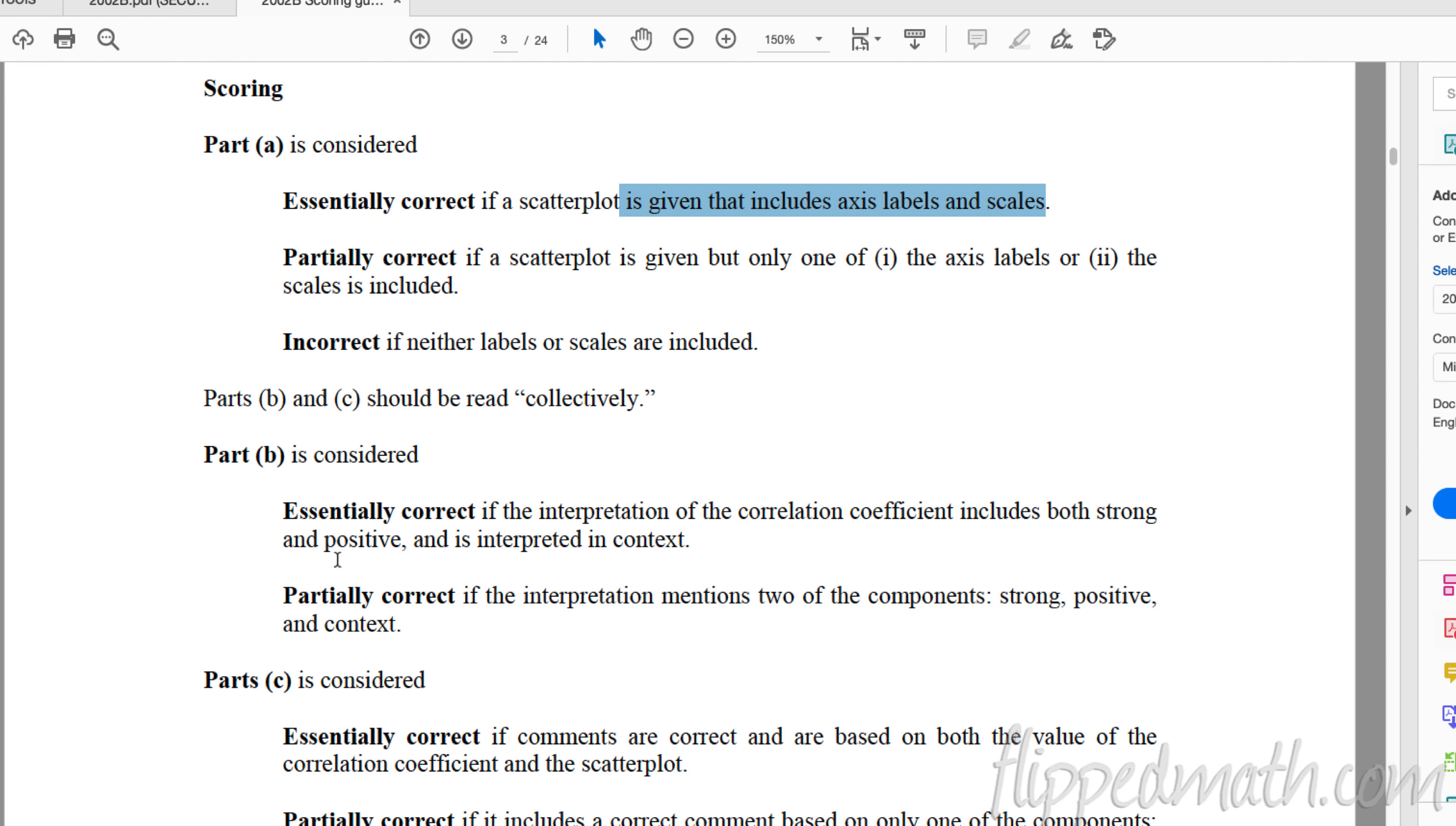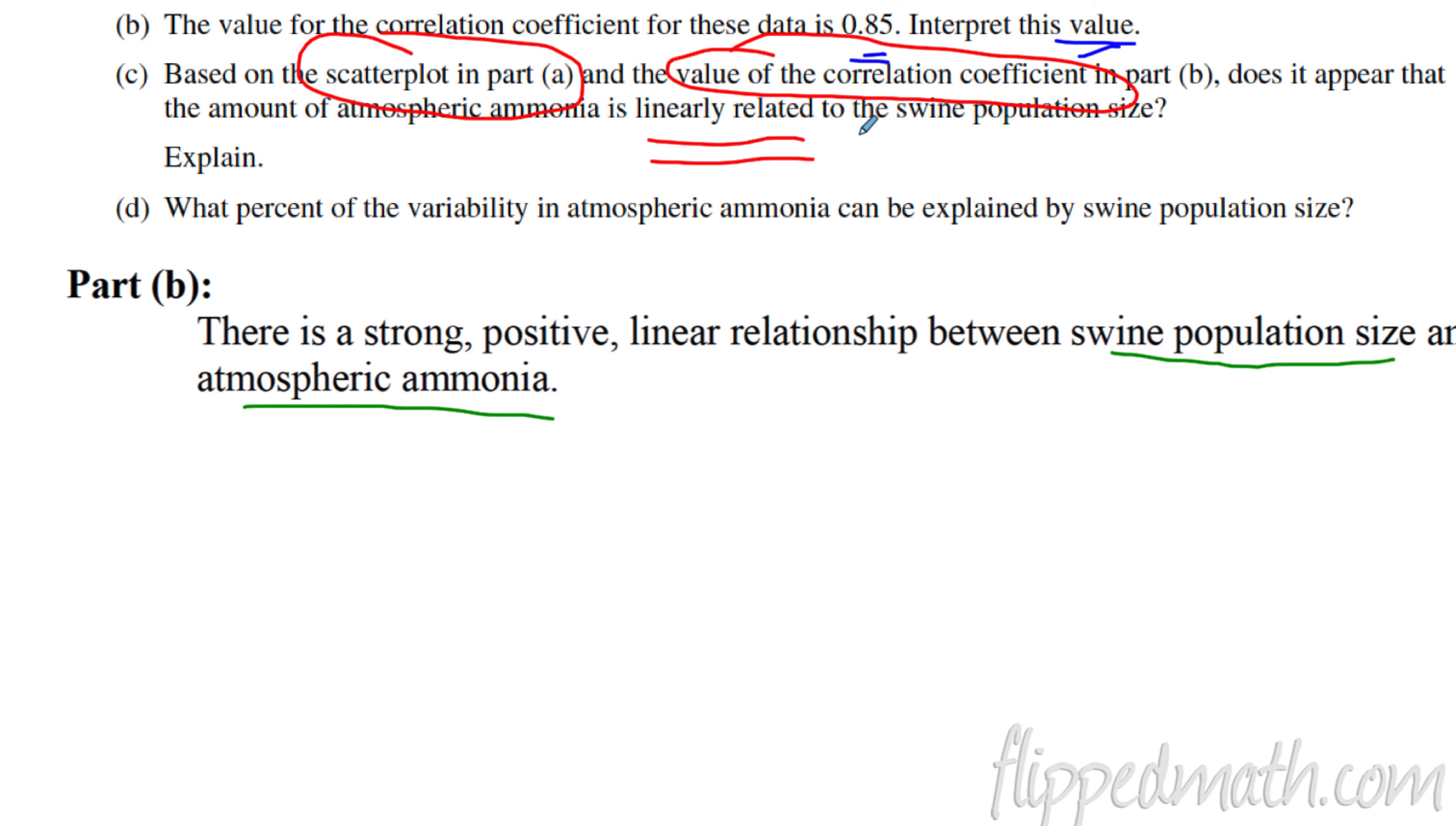Now, my students just completed this problem. Barely any of them, it's probably my fault, but barely any put it in context. So you need to have it in context. There's a strong positive linear relationship between whatever the x variable is and whatever the y variable is. Let's look at the solution guide to see how we get points for this. Part B is considered essentially correct if the interpretation of the correlation coefficient includes both the words strong and positive, and it's interpreted in context. So really, to get this one correct, what you need, the word strong, positive. The linear part we're going to address in the next question. And then you also need to include, don't say between the x and y variables. Say between swine population and atmospheric ammonia.